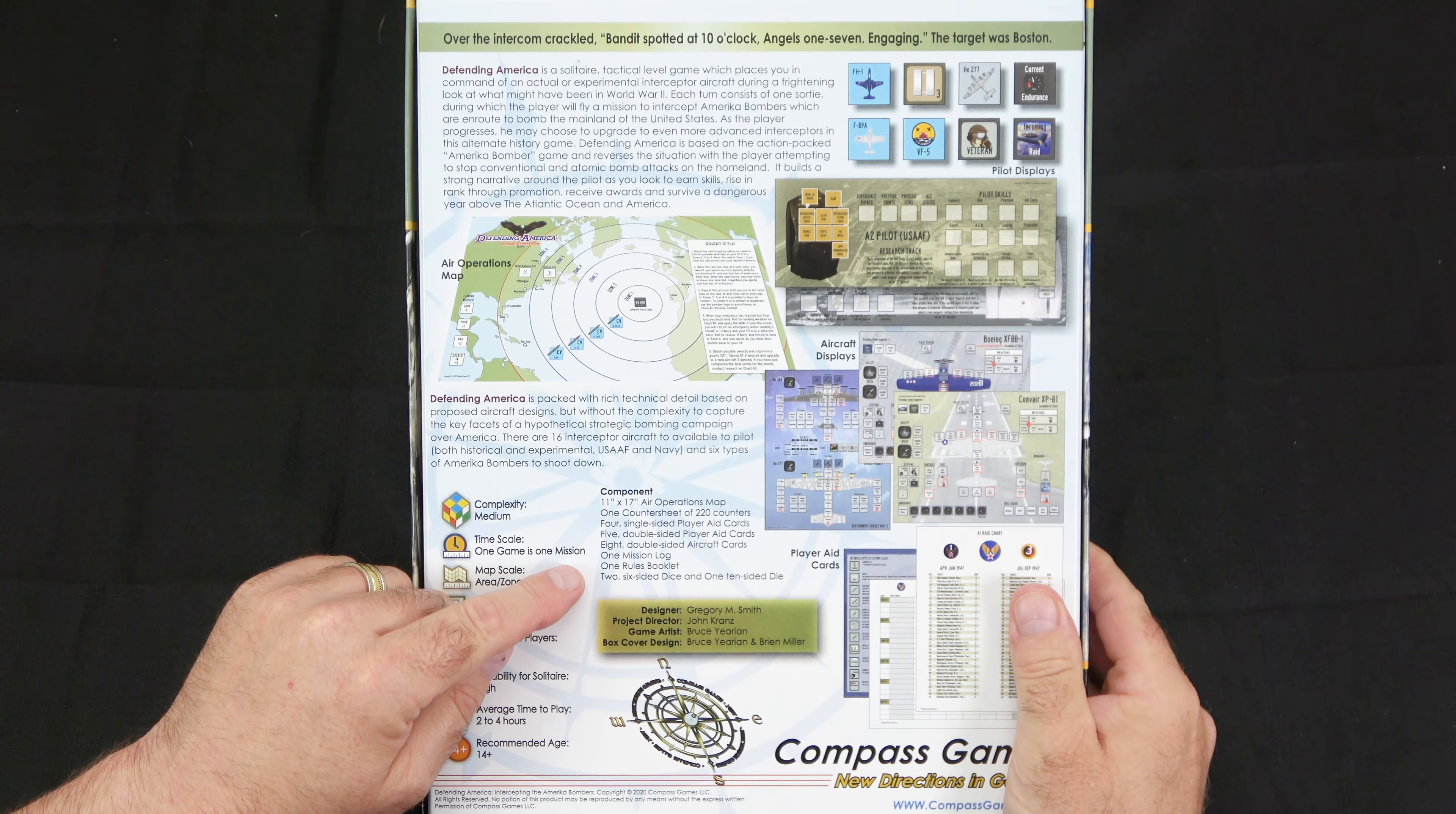And we'll take a look at the countersheet that comes with the game. This is shrink-wrapped for a reason. These will punch out very easy, as I've said before, with the new Compass counters. If you touch them, they'll just come out in a strip.